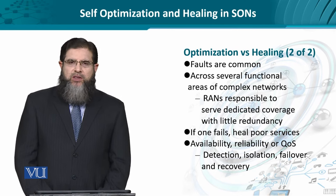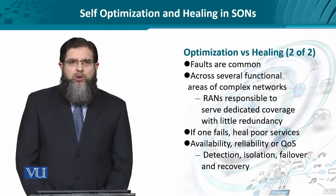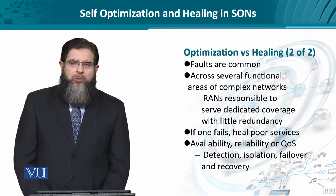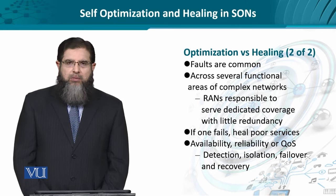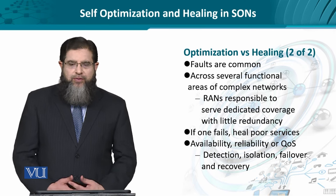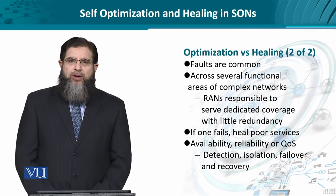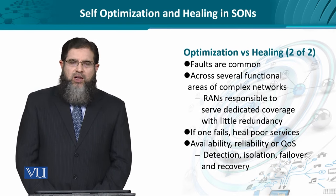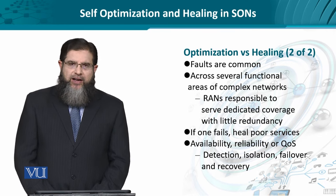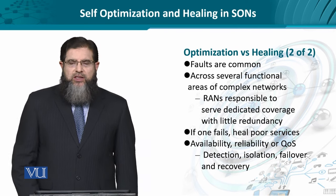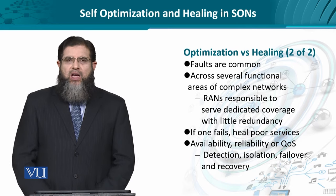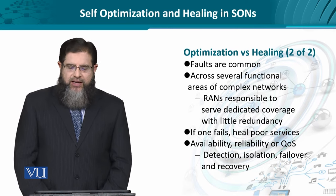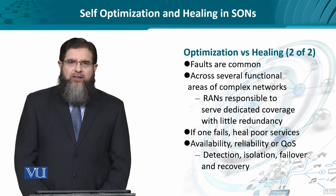Consider a radio access network — that is, E-NodeB — which is responsible for serving a certain geographical proximity. If it fails and has some redundancy, it might work with degraded service; if there is no redundancy, it might stop altogether. Services have to be restored through ensuring availability, reliability mechanisms, and QoS guarantees — done through a systematic process of detection, isolation of the error, failover or fail-safe link provisioning, and eventually recovering the failed component.